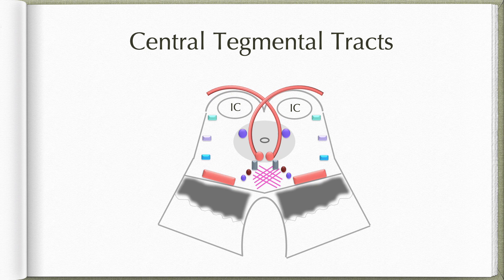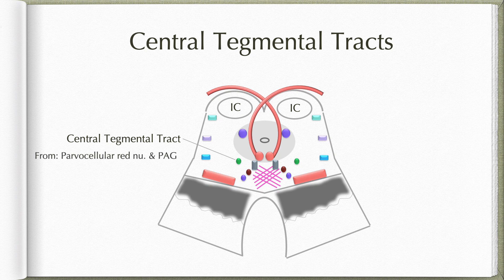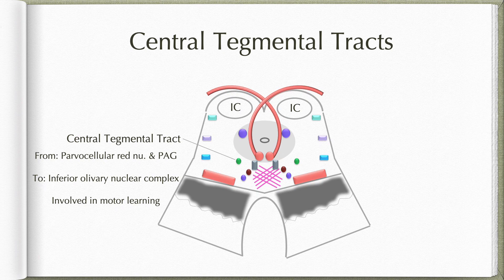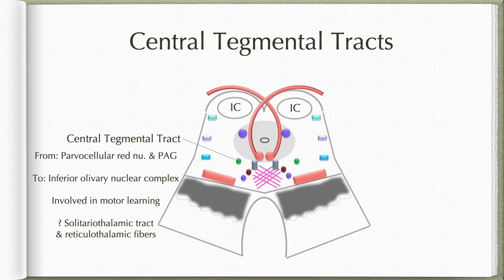Coming to some of the composite fibers within the midbrain, first let us begin with the central tegmental tracts. These are the tracts found in the anterolateral part of the tegmentum. The fibers basically include fibers descending from the parvocellular part of the red nucleus and some fibers beginning from the periaqueductal gray. These fibers descend to the medulla where they project to the inferior olivary nuclear complex — an important pathway involved in motor learning. In addition, the central tegmental tract may also have ascending fibers of the solitariothalamic tract and reticulothalamic tract, making it a composite tract.